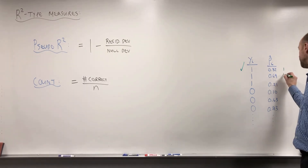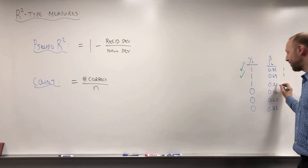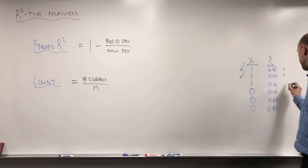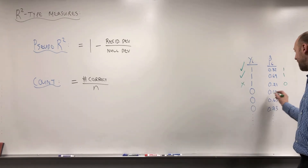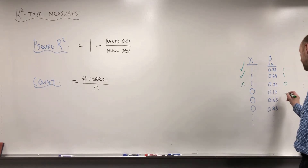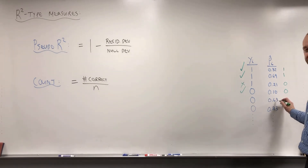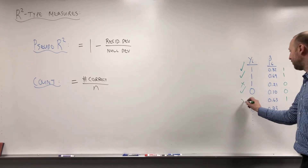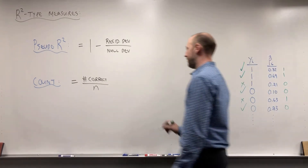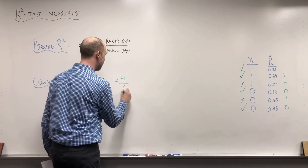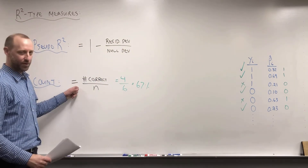For example, using just six observations: for person one, the outcome happened and our model says 82% chance — we round up to 'it's going to happen' and we get it correct. For person two, 69% chance — correct. For person three, 21% chance — we say it won't happen, but it did — wrong. For person four, 10% chance — we say it won't happen, it didn't — correct. For person five, 63% chance — we think it will happen but it didn't — wrong. For person six, outcome didn't happen and our model says it won't — correct.